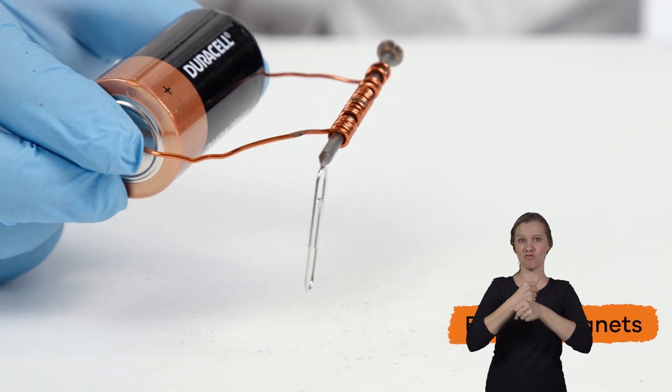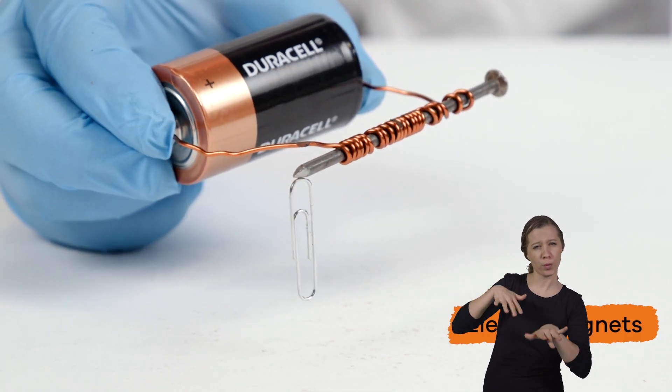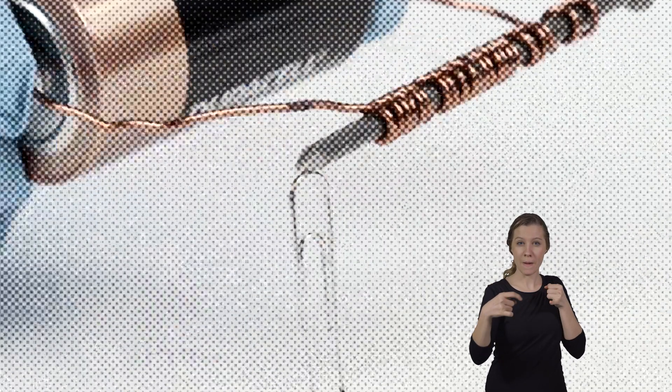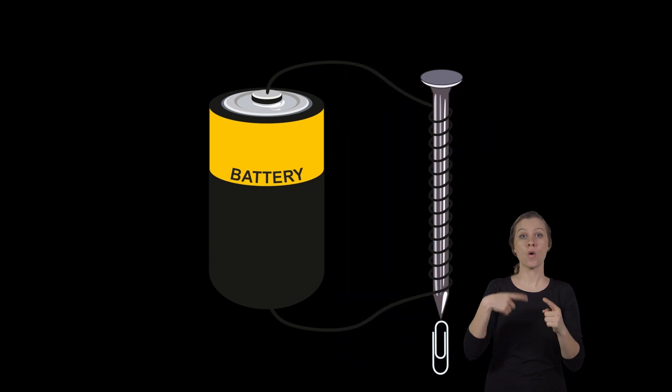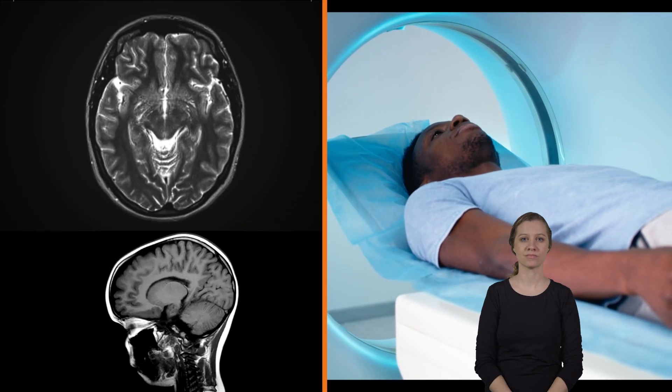Electromagnets are created by running an electrical current through a coil with a metal core. The energized core creates a magnetic field, and when the current is shut off, the magnetic field disappears.